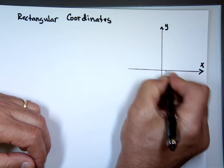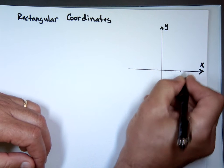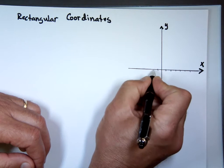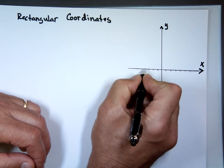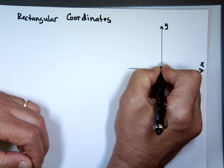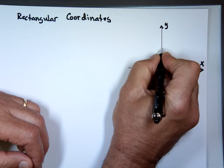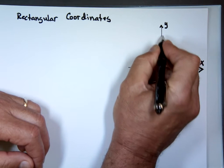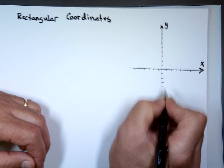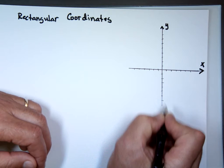I have some numbers. 1, 2, 3, 4, 5, 6. Negative 1, negative 2, negative 3, negative 4, negative 5, negative 6. 1, 2, 3, 4, 5, 6, 7, 8. Negative 1, negative 2, negative 3, negative 4, negative 5, 6, 7, 8.